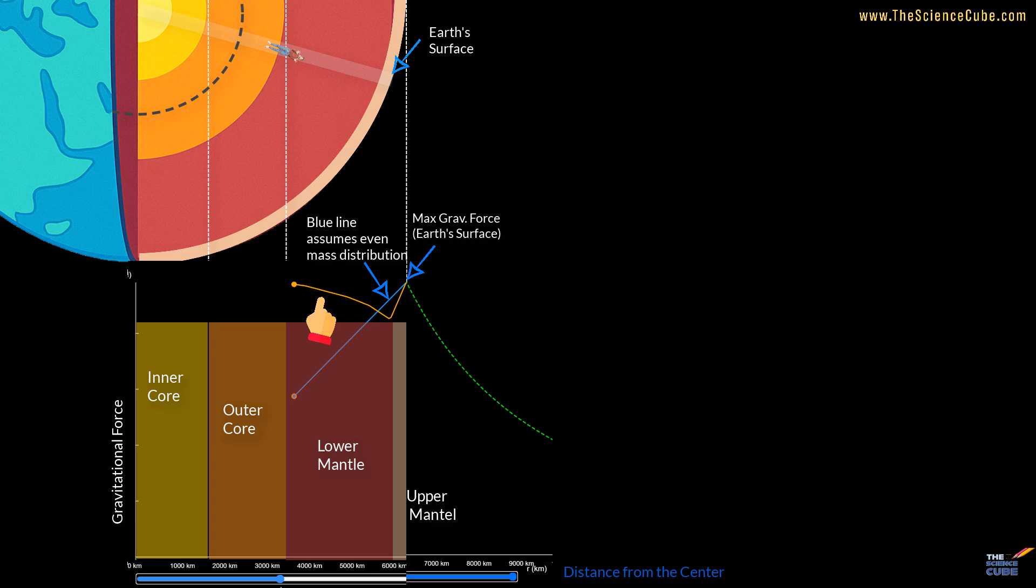Finally, it drops off more steeply, but not linearly, to zero at the center. Because the mass exerting force on the capsule starts shrinking rapidly. So you see, this looks linear, but it is actually not a straight line.